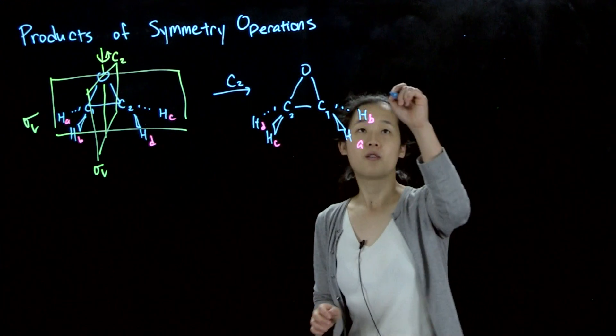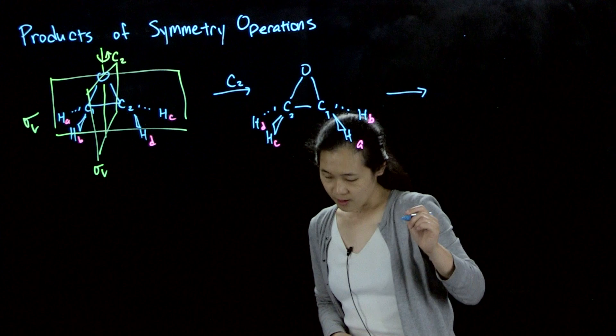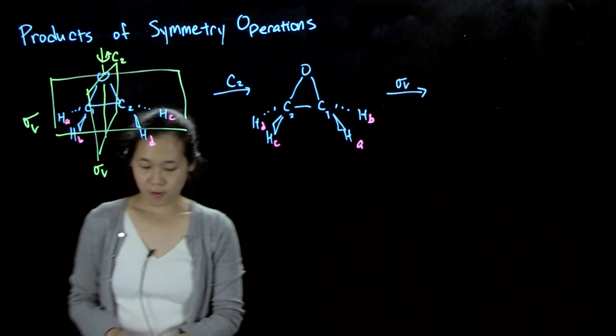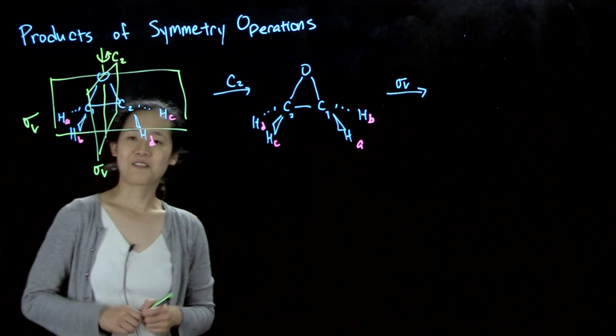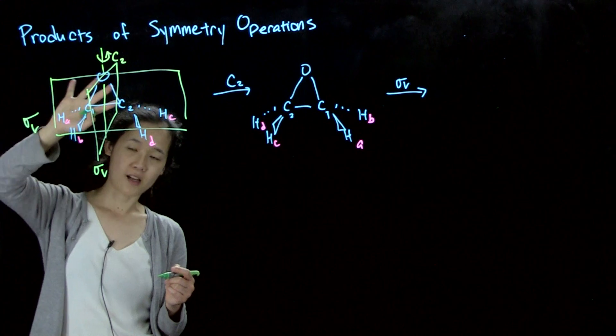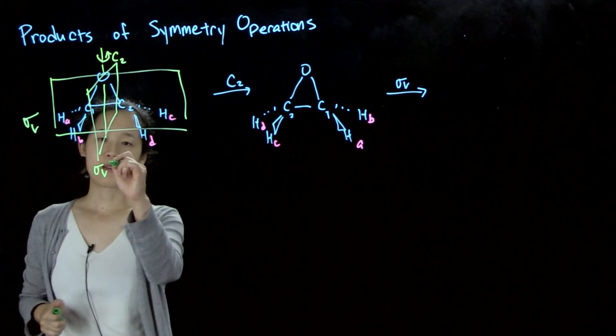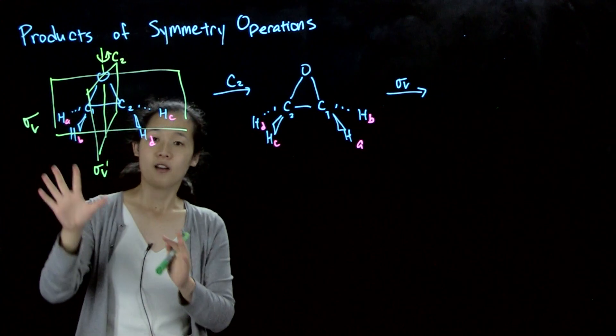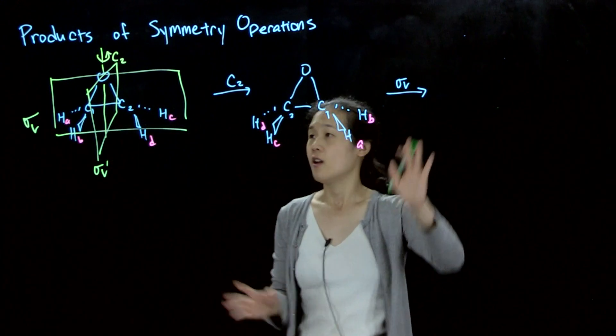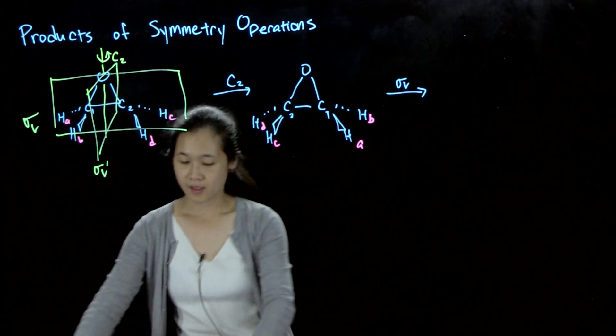And then suppose we then go to sigma v. We have two sigma v's. So for just clarity purposes, let's call this sigma v in the plane of the board sigma v, and we'll call this one sigma v prime, just for clarity. So if we're saying we're doing a sigma v operation, we're doing it in the plane of the board.